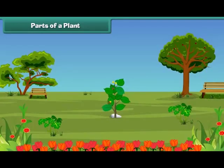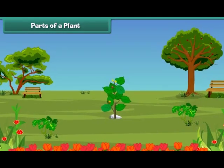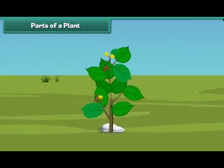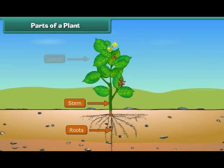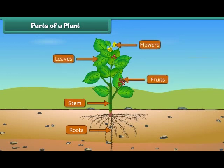Friends, let us discuss various parts of a plant. The main parts of a plant are roots, stem, leaves, flowers and fruits. Let us know them one by one in more detail.